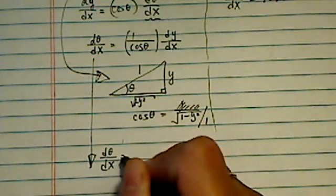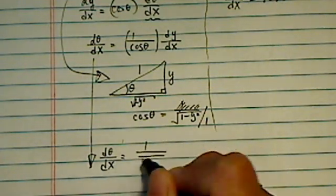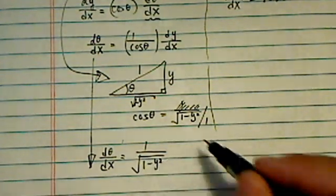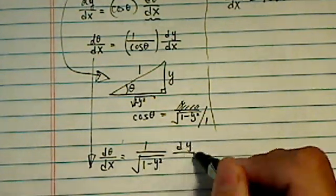d theta dx is equal to 1 over, I'm just literally copying it in there, 1 minus y squared dy dx.